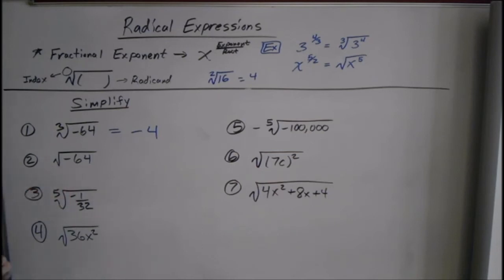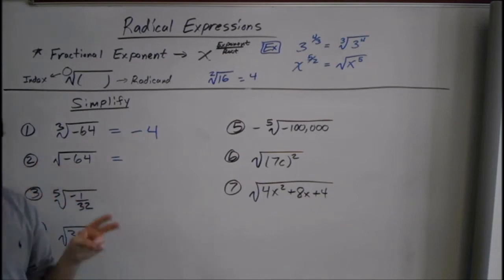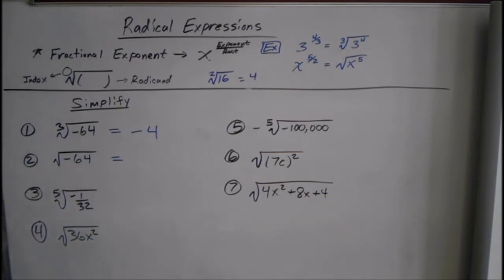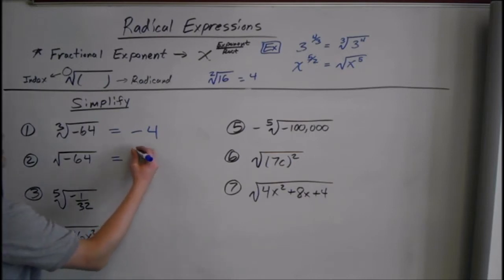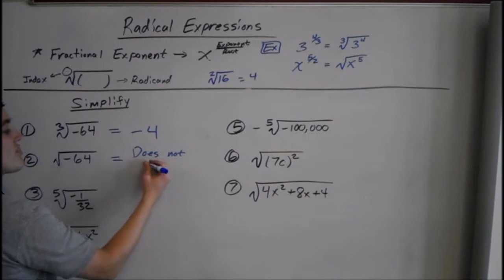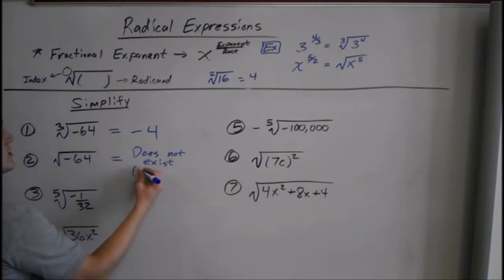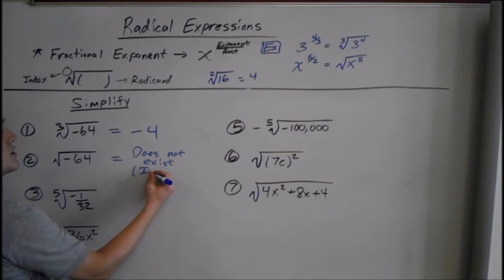Here we have the square root of negative 64. We can't have the square root of a negative, because two negatives multiply to give you a positive, and two positives multiply to give you a positive. So this does not exist — it's imaginary, which we don't get into in this class.